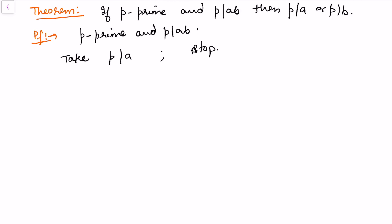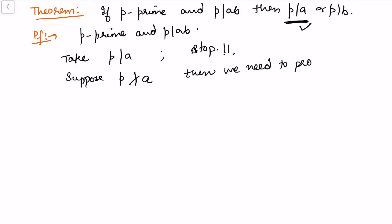Because the first condition is achieved — p divides a or p divides b — we can stop here. Now suppose instead that p does not divide a. In that case, we need to prove that p divides b. So this is what we need to prove when p does not divide a.